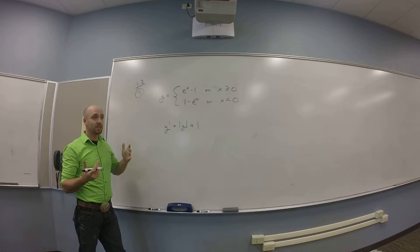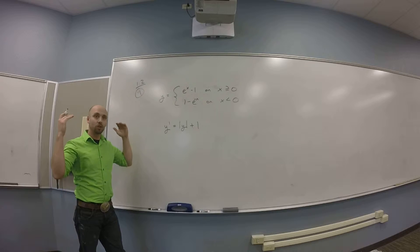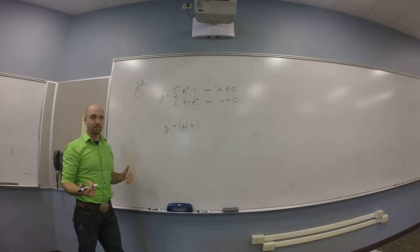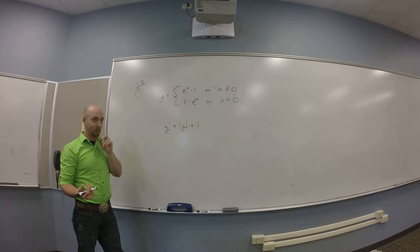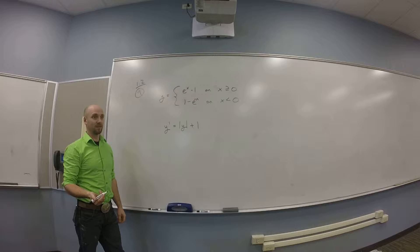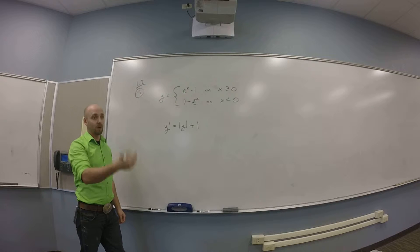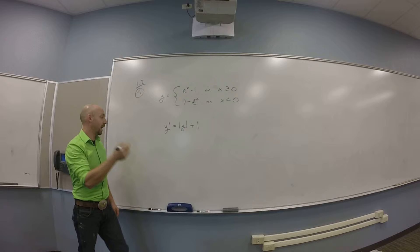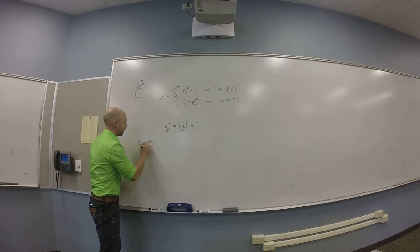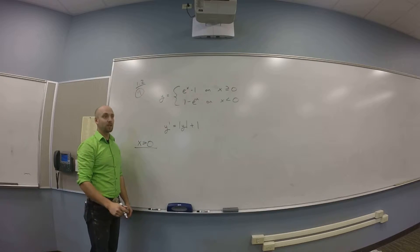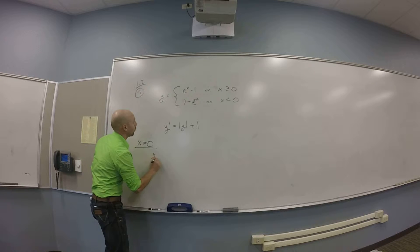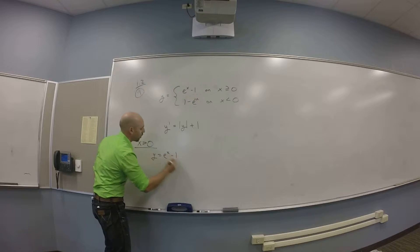So how do we do this? There should be three kind of parts, two of which are pretty clear — below zero and above zero. Let's start by assuming x is bigger than zero and working with that. If x is bigger than zero, then y is e to the x minus 1.